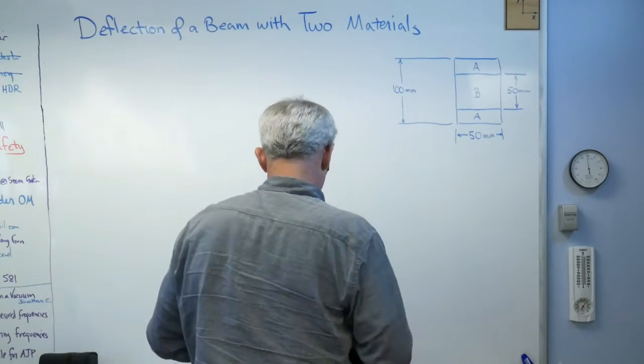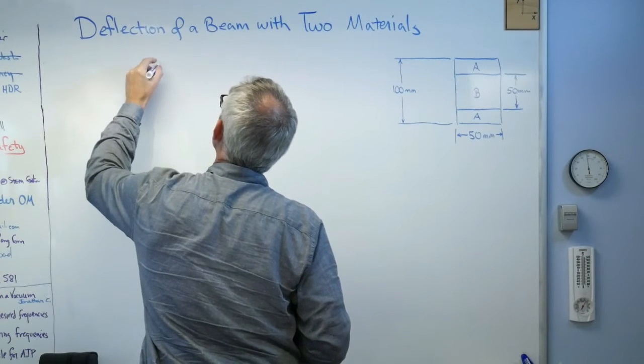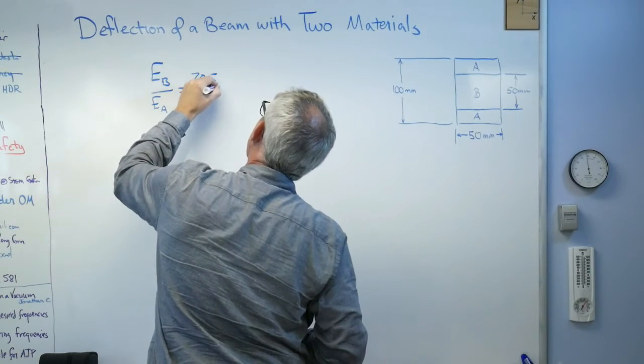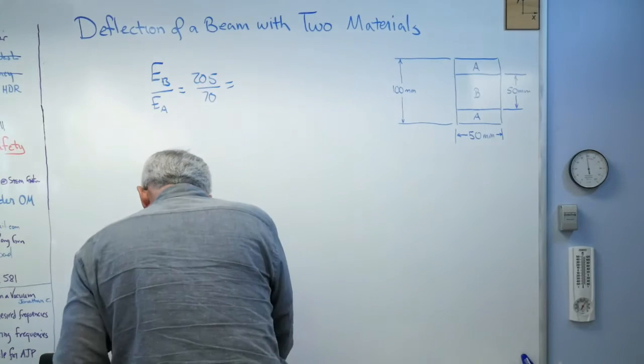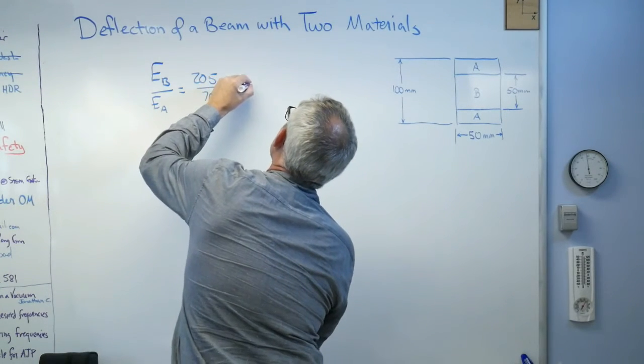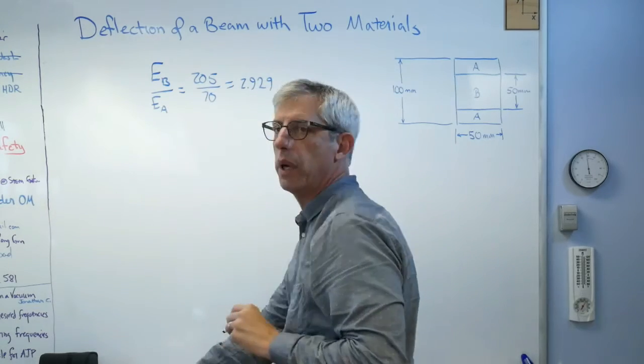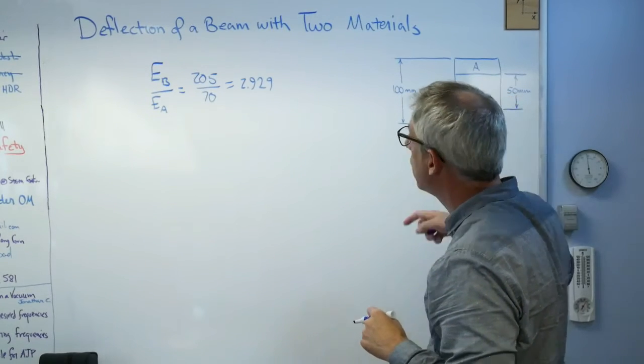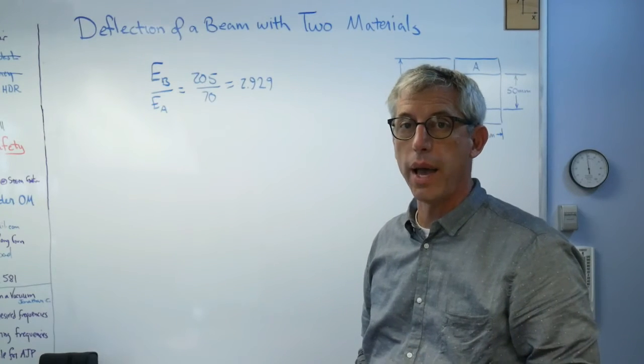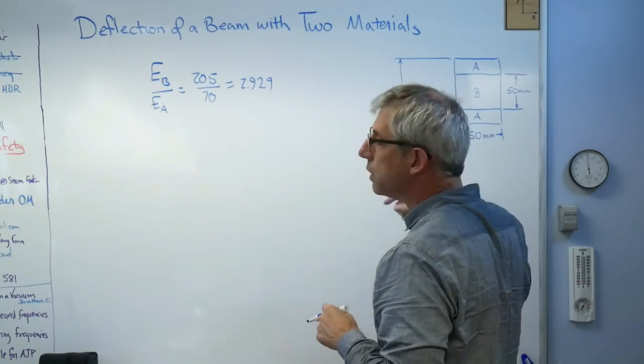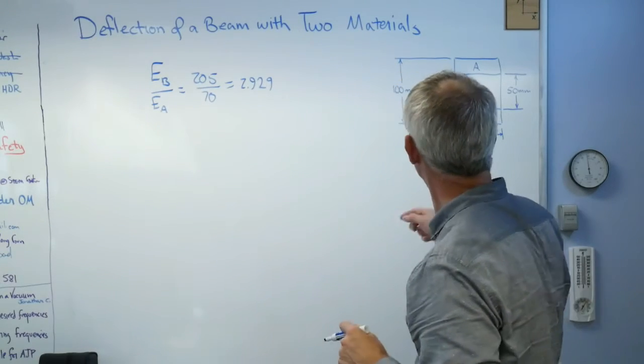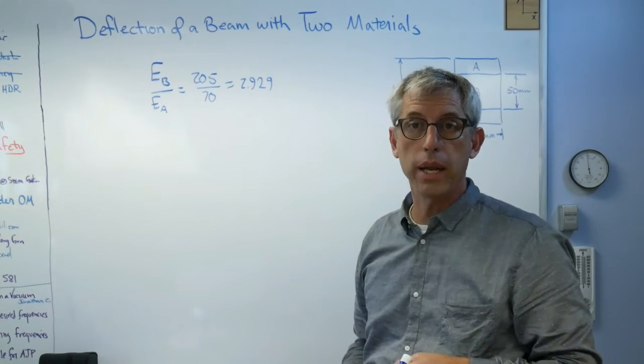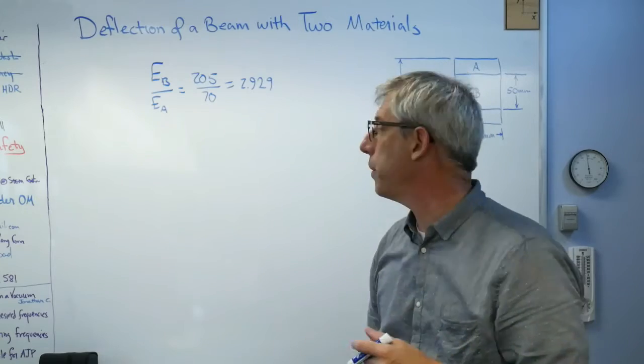Well, let's see. EB over EA is basically 205 over 70 and that is, let me see if I can get that number right, 2.929. So what? Well, if I take B and I make it 2.929 times as wide and I give it the same elastic modulus as A, I'm going to have accounted for the fact that that's a different material and make it so the beam is all made out of one material or the equivalent beam is all made out of one material.